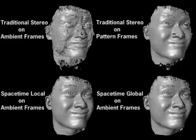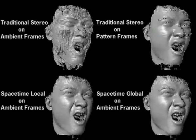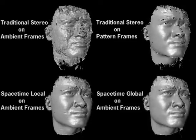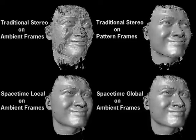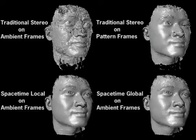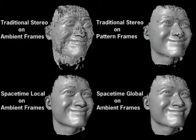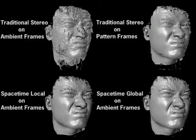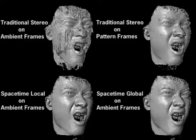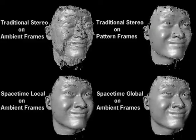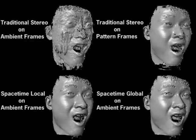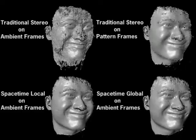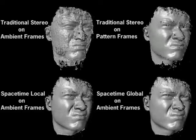On the upper right, we apply traditional stereo to each pattern frame independently. The projected texture significantly improves the reconstruction, but it is temporally noisy and no longer aligned with the color frames. On the lower left, we apply spacetime stereo at each ambient frame. Spacetime stereo integrates stripe information from neighboring frames, yielding high resolution shape with greater temporal coherence. However, some striping artifacts arise from overfitting.